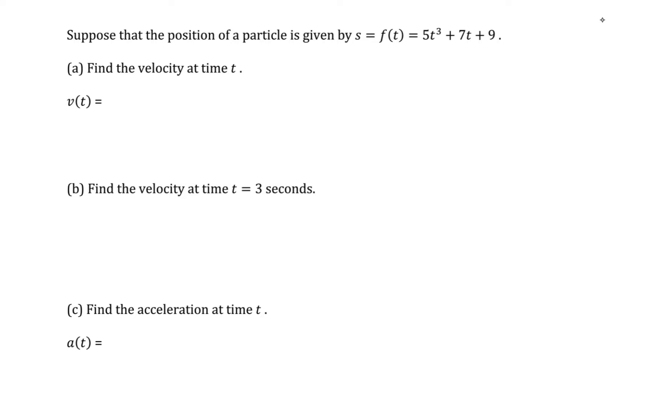Suppose that the position of a particle is given by s equals f of t, which is 5t cubed plus 7t plus 9. Find the velocity at time t.